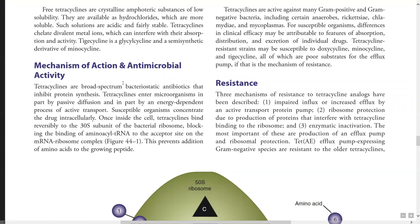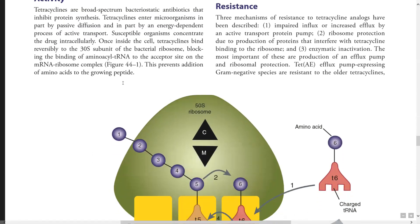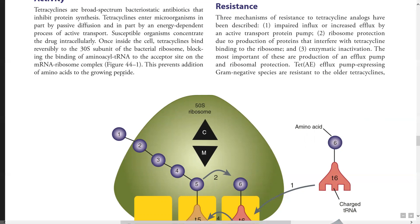If we talk about the mechanism of action or antimicrobial activity of tetracycline, first of all, tetracyclines are broad spectrum bacteriostatic antibiotics. Bacteriostatic means that they are going to stop the growth of the bacterium — they are not going to destroy the bacteria itself, but they are going to inhibit its growth by inhibiting protein synthesis. Protein is essential for growth, so that's how it's going to work.